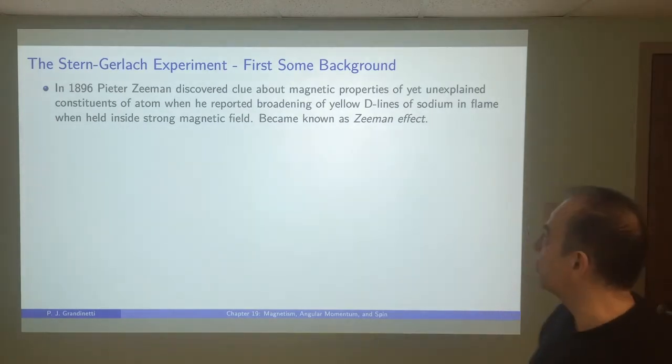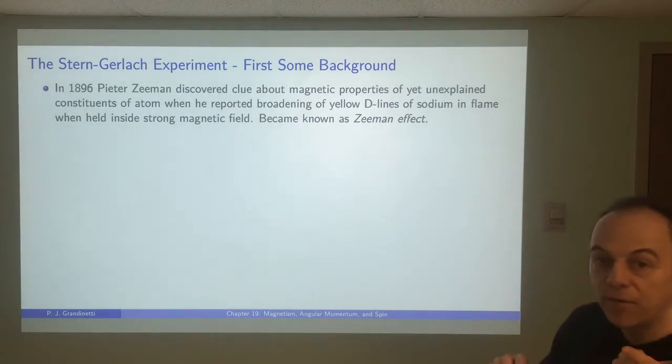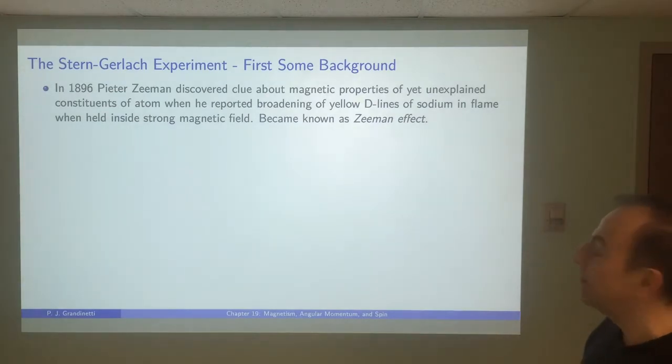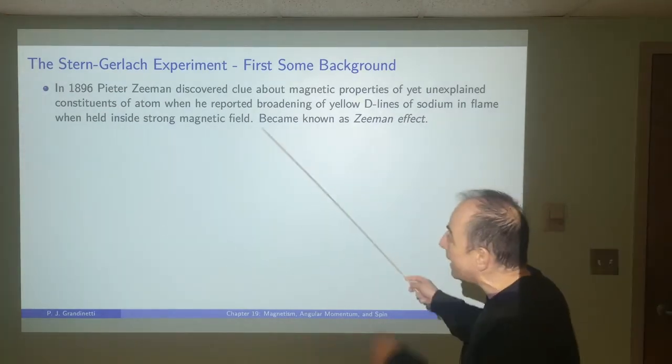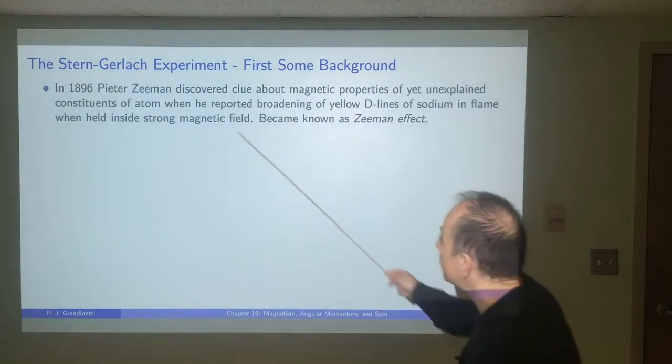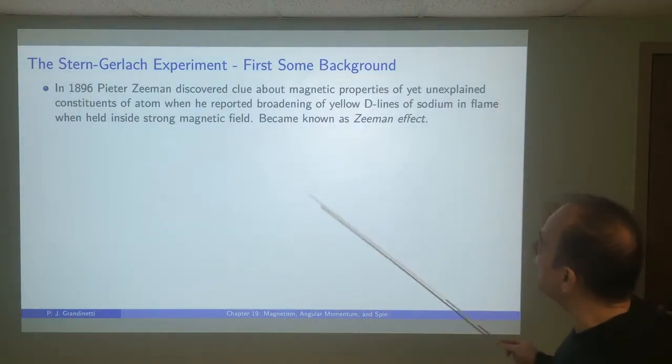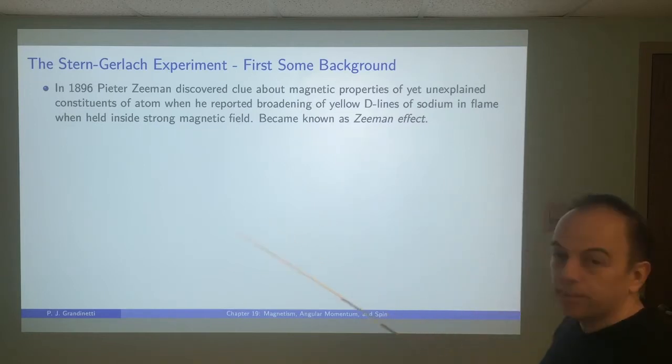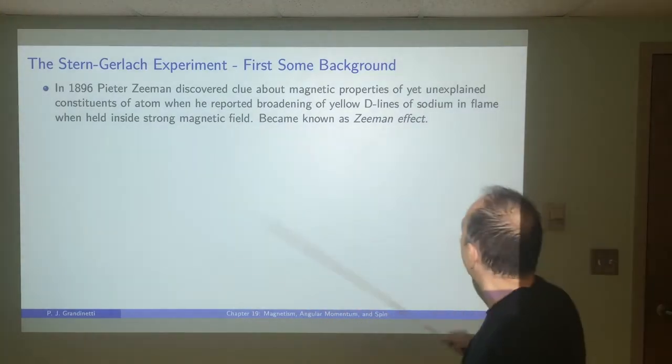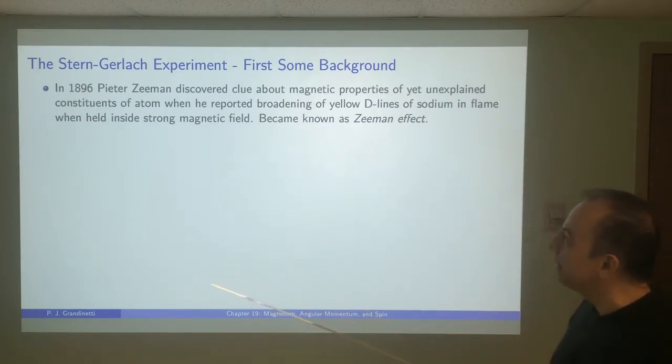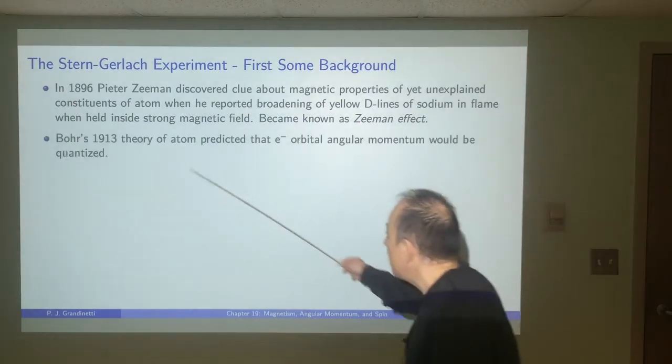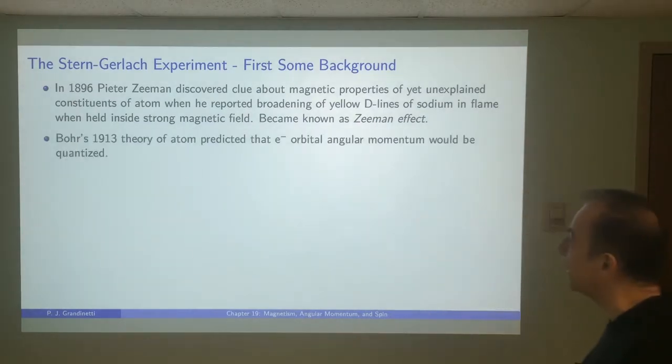Now we're going to look at something called the Stern-Gerlach experiment. We've already gone through all the background physics to understand this experiment, but before we get to the experiment, I want to give you a little bit of historical background. Back in 1896, Pieter Zeeman discovered a clue about the atomic structure when he found that the yellow lines of sodium in a flame started to broaden out in the presence of a magnetic field.